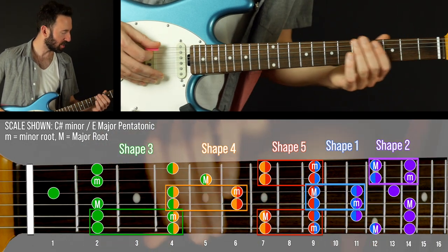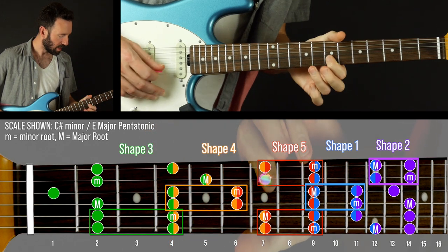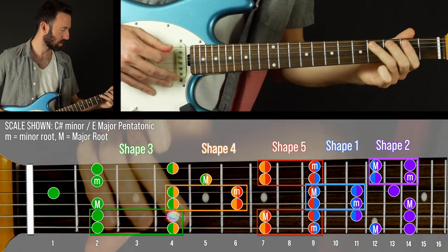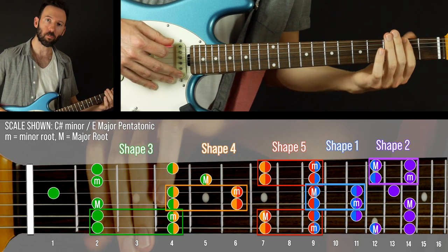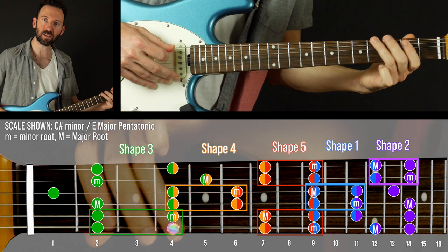Check this out. So every shape of the pentatonic scale has these little two by two cells where from one note to the next we go up two frets and it repeats on the adjacent string.